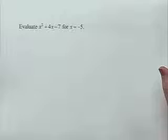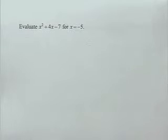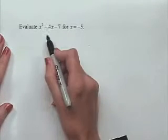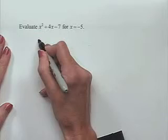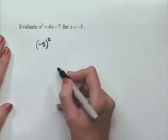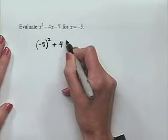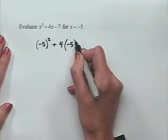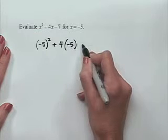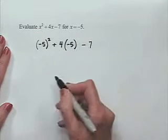Here's another algebraic expression to evaluate. Evaluate x squared plus 4x minus 7 for x equals negative 5. In substituting negative 5 in for x, we need to remember that if we're squaring, we want to enclose this within parentheses. We'll also use parentheses to enclose the negative 5 in the multiplication portion, and then we have the subtraction of 7.